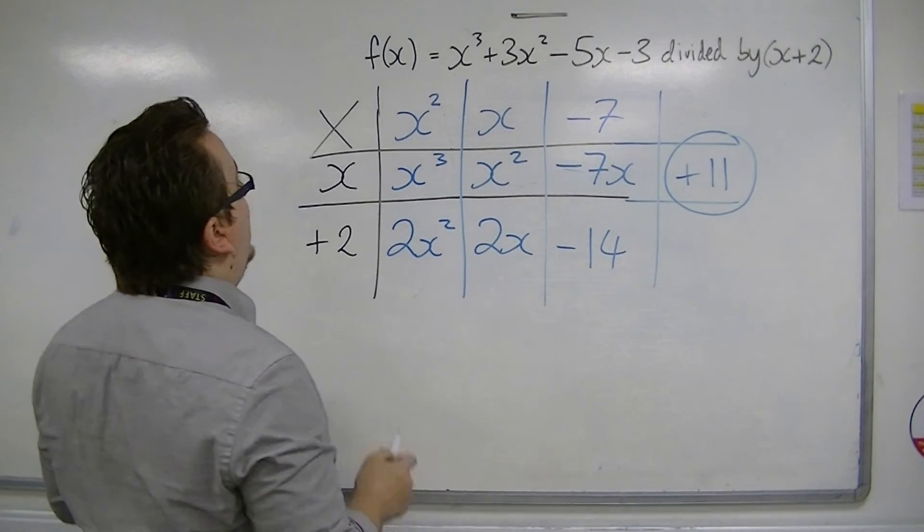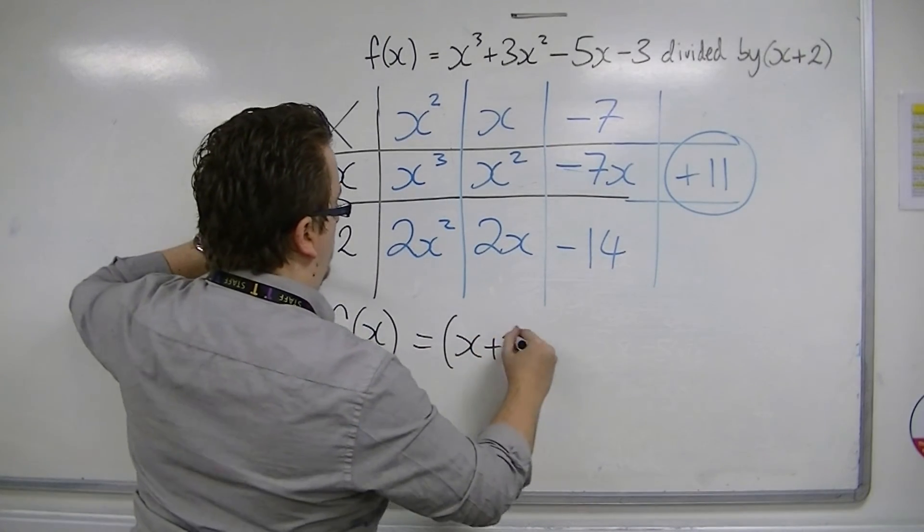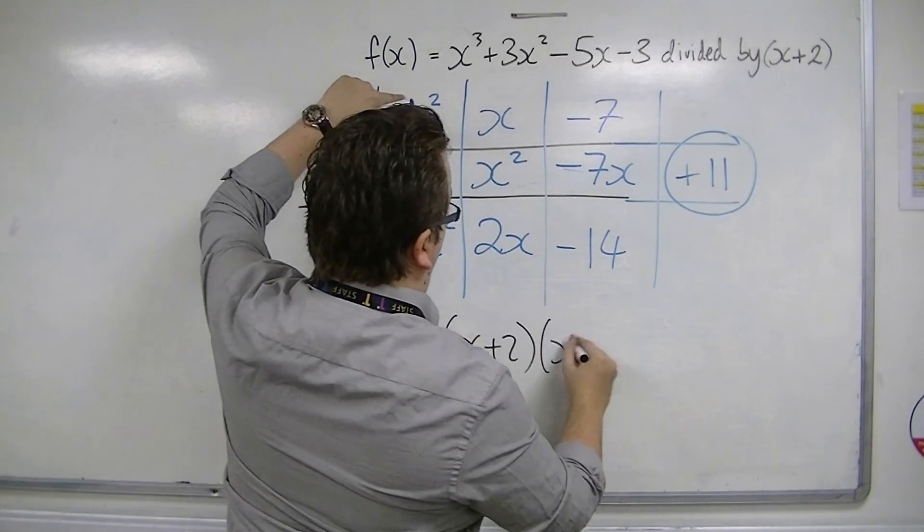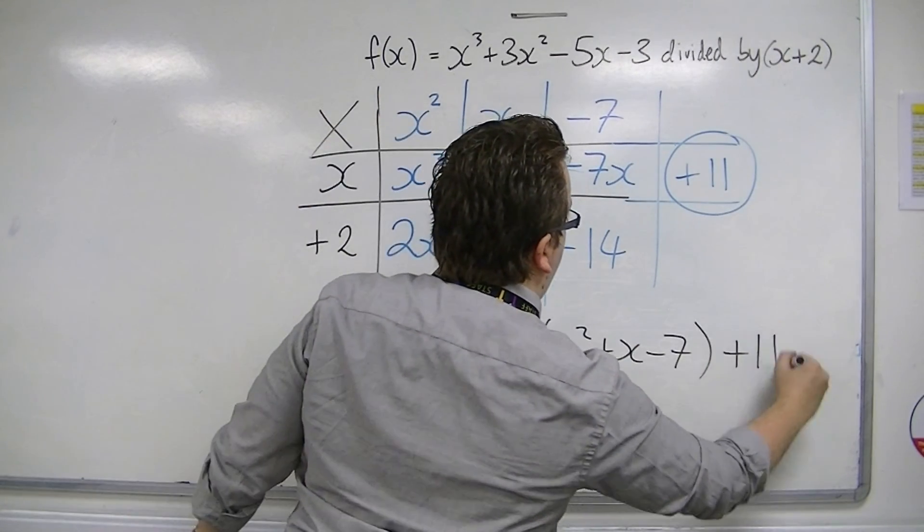So, that allows me to then go, well, f of x is x plus 2 times x squared plus x minus 7 plus that remainder of 11.